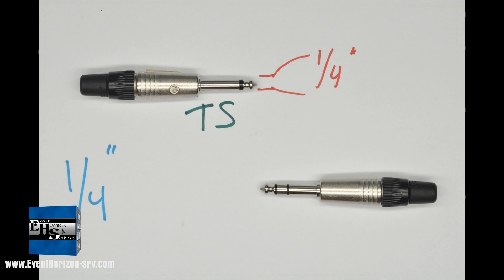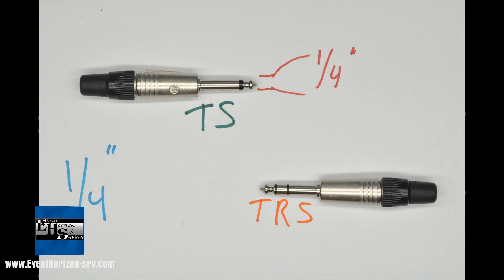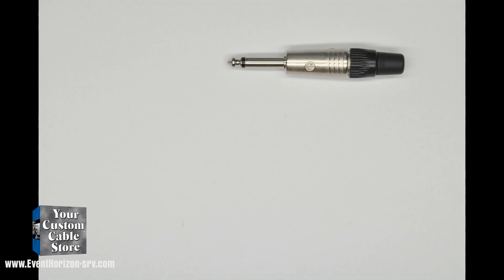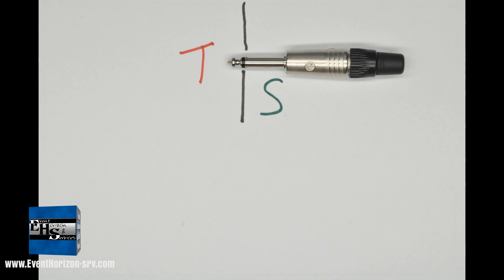The TS quarter-inch, which is unbalanced and often referred to as mono, and the TRS, which is balanced and often incorrectly referred to as stereo. The TS has two contact points: the T for tip and the S for sleeve.